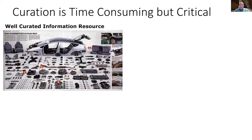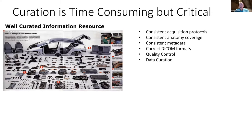What you really want is a well-curated information source where everything is organized and you know how all the parts fit together. That requires not just anonymity, but consistent acquisition protocols — otherwise you get different answers from different scanners. You need consistent anatomical coverage, comparable clinical metadata, correct use of DICOM formats, and quality control to confirm data meets minimum quality criteria. All of this is what we call data curation.